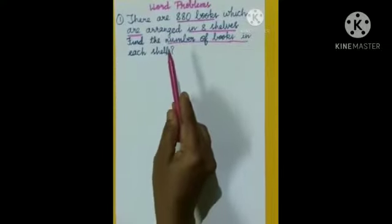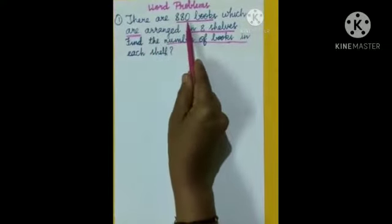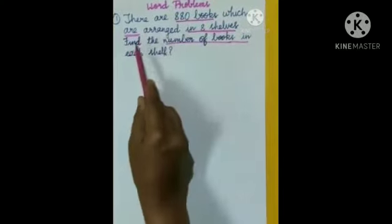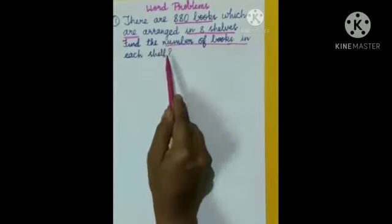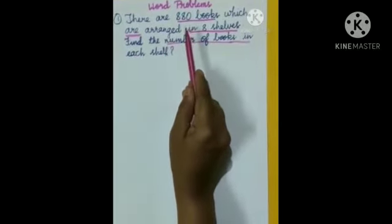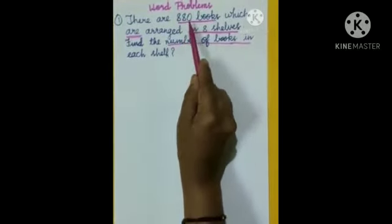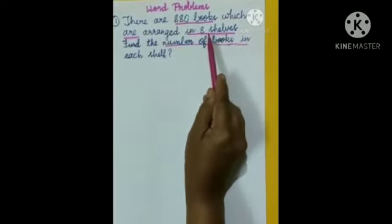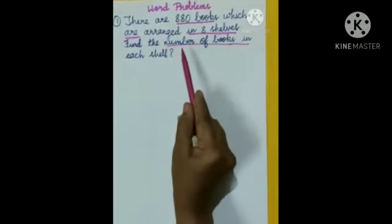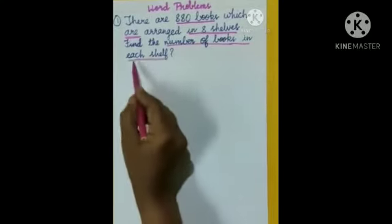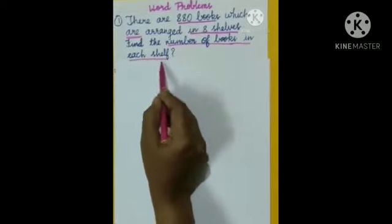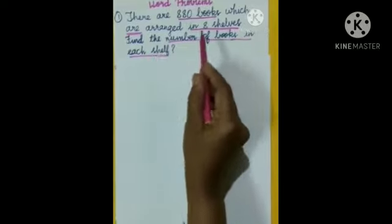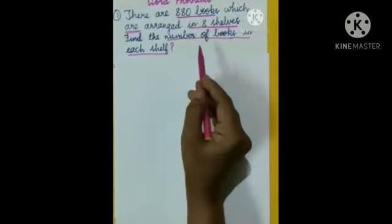Let us do classwork word problems. There are 880 books which are arranged in 8 shelves. Find the number of books in each shelf. What is given? 880 books are in 8 shelves — 8 shelves means many shelves. What we should find out: number of books in each shelf. Each shelf means one shelf.